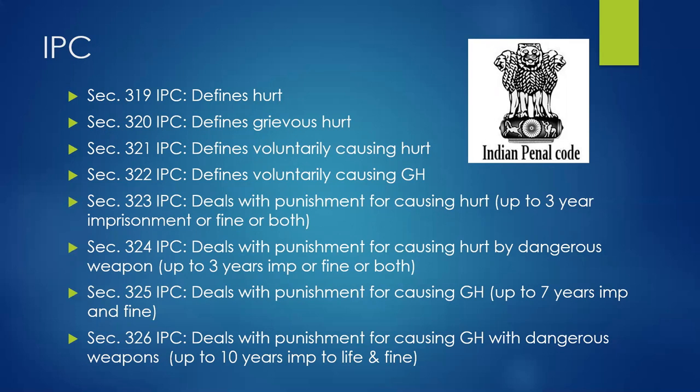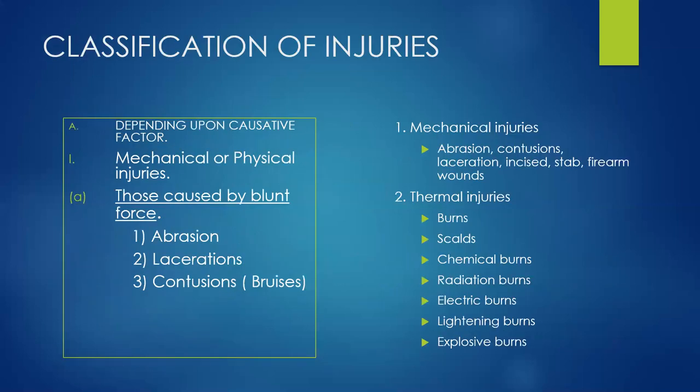Section 324 IPC deals with punishment for causing hurt by dangerous weapon; the punishment may be up to 3 years imprisonment, or fine, or both. Section 325 IPC deals with punishment for causing grievous hurt; punishment may be up to seven years imprisonment and fine. Section 326 deals with punishment for causing grievous hurt with dangerous weapons; punishment may be up to 10 years imprisonment or life, and fine.